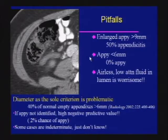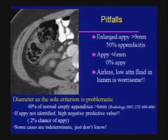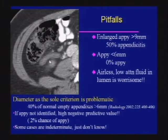The major pitfall with appendicitis: using diameter as the sole criterion can be very problematic. About 40% of normal empty appendices without feces or air in the lumen can be bigger than six millimeters. If you have an enlarged appendix without peri-appendiceal stranding and it's greater than nine millimeters, there's about a 50% chance of appendicitis. If the appendix is less than six millimeters with no stranding, there's a 0% chance — so six millimeters serves as a useful lower threshold.